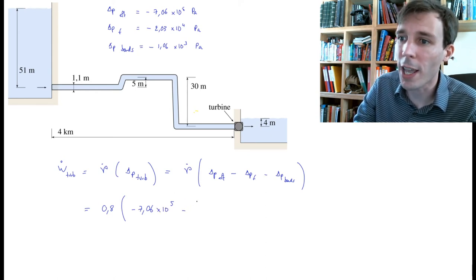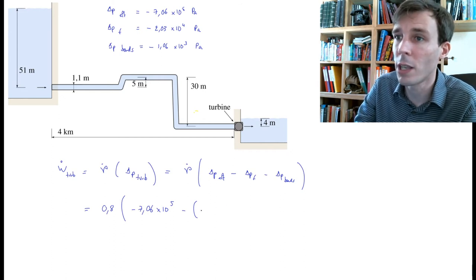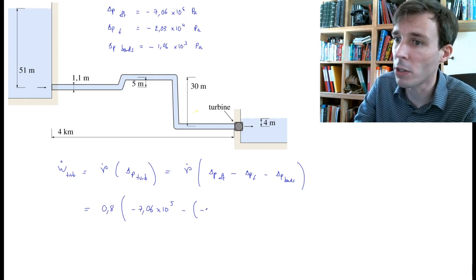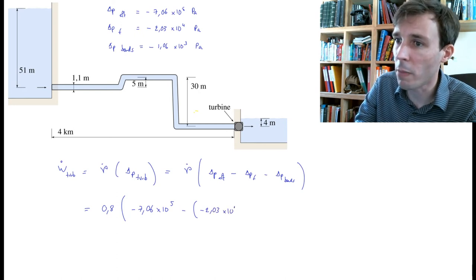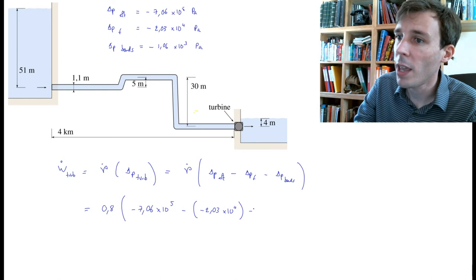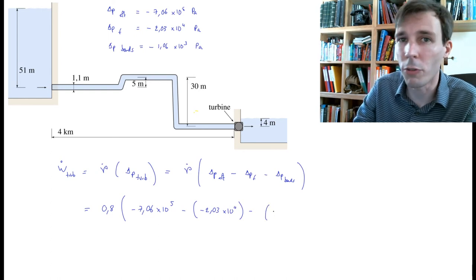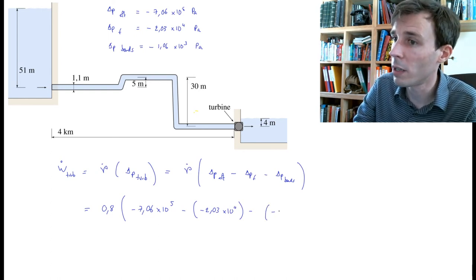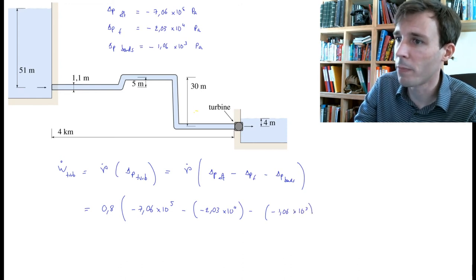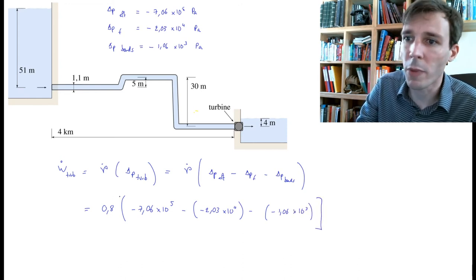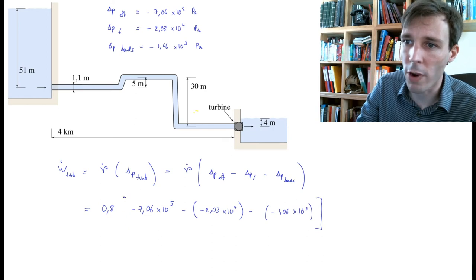But to this I have to subtract two negative numbers. One is the delta P due to friction, minus 2.03 times 10 to the power 4, and the power loss due to the bends, which is minus 1.06 times 10 to the power 3.